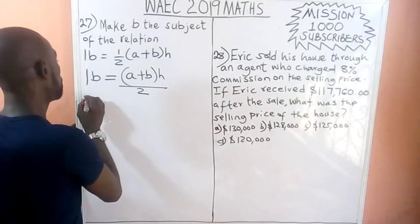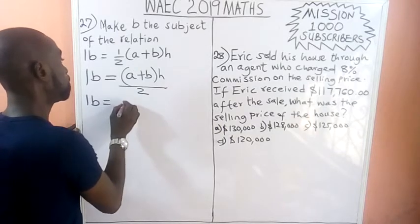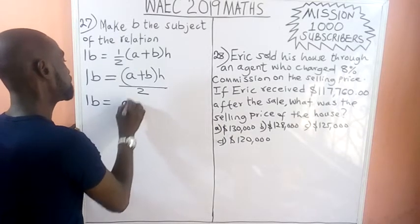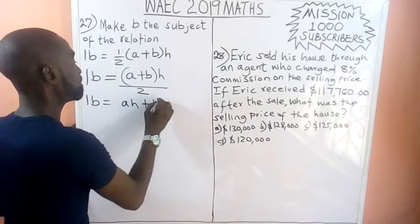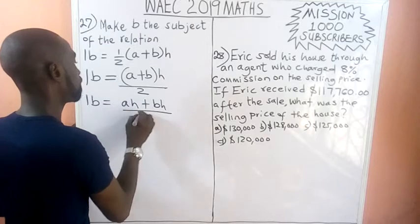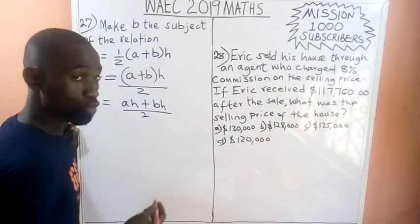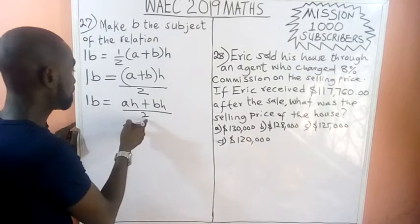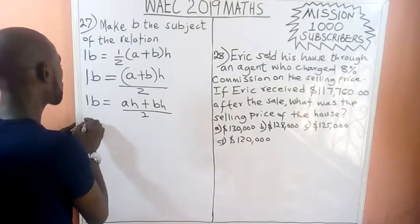So we have lb equals ah plus bh, all over 2. The next thing is we cross multiply. Two times lb will give us 2lb. So we have 2lb equals ah plus bh.